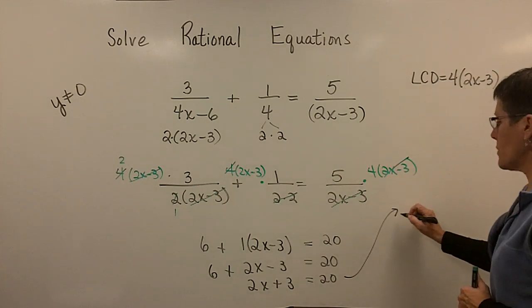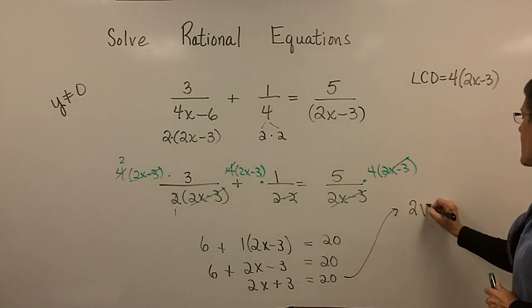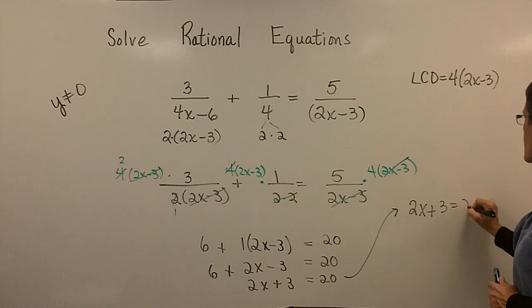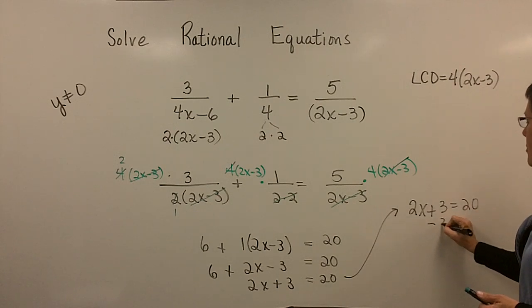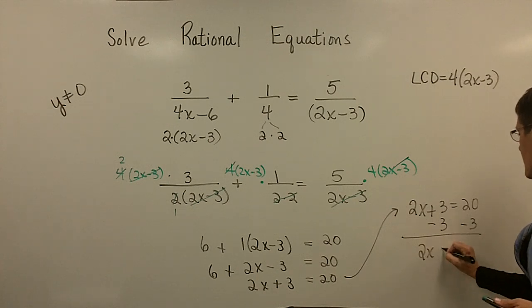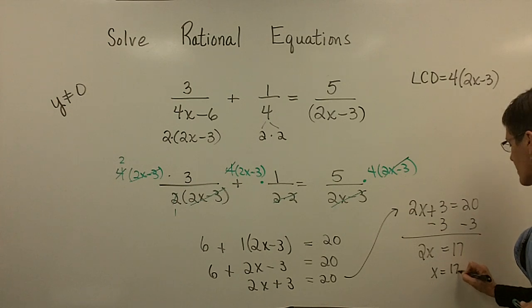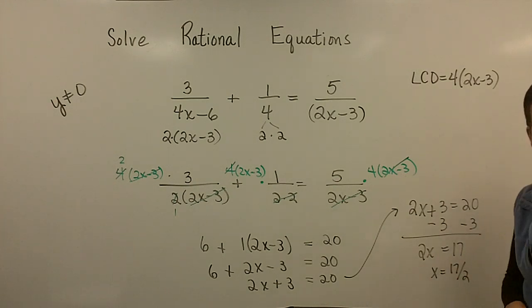And then let's take this right over here. So 2x plus 3 equals 20. Then you'd subtract 3 from both sides. And then you'd divide both sides by 2. I'm not going to show that. And I'd get an answer of 17 halves. Let's take a break and we'll come back and do a few more.